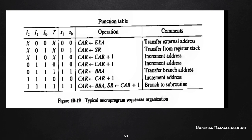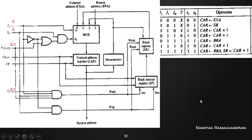Now consider the function table for the microprogram sequencer. Based on inputs i2, i1, i0, and T, we set the selection field value of the multiplexer to perform different activities. For the cases where i1 and i0 are 0-0, 0-1, or 1-0, we do not need to consider i2 and T — they do not affect the loading activity. Only when i1 equals 1 and i0 equals 1 do we also need to consider the values of i2 and T.